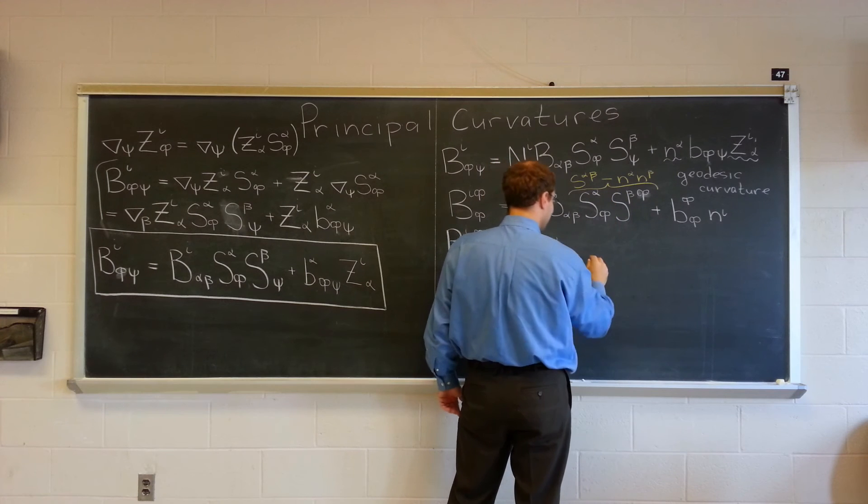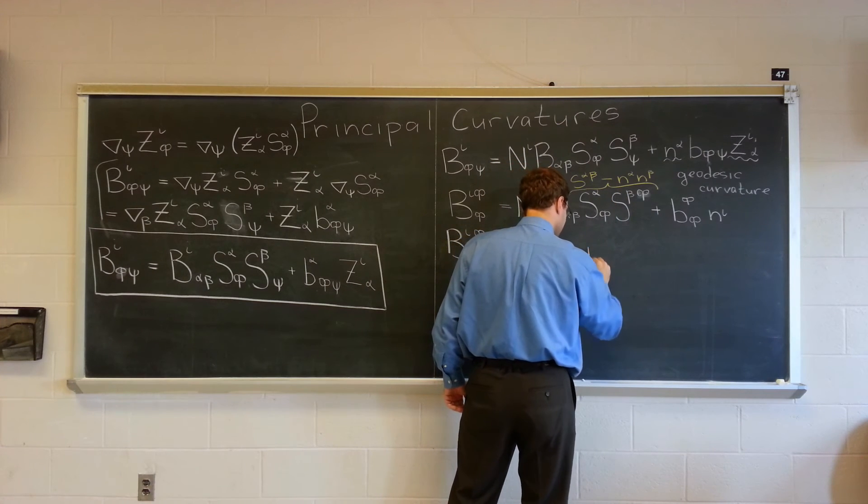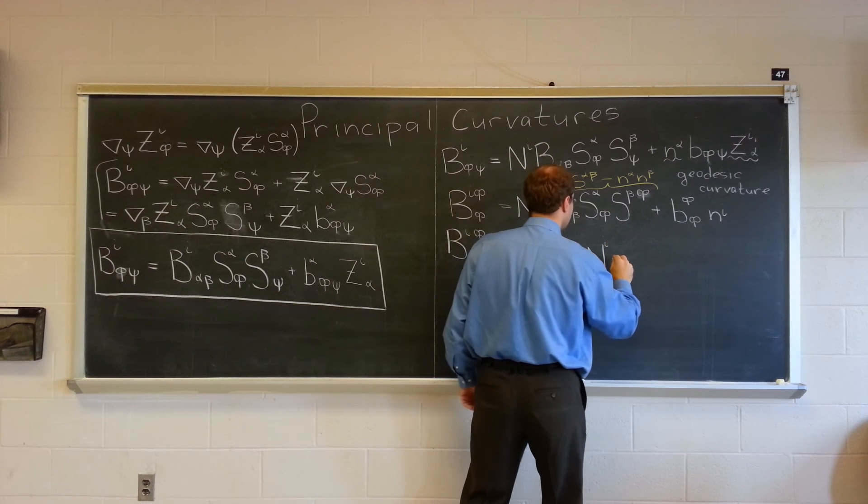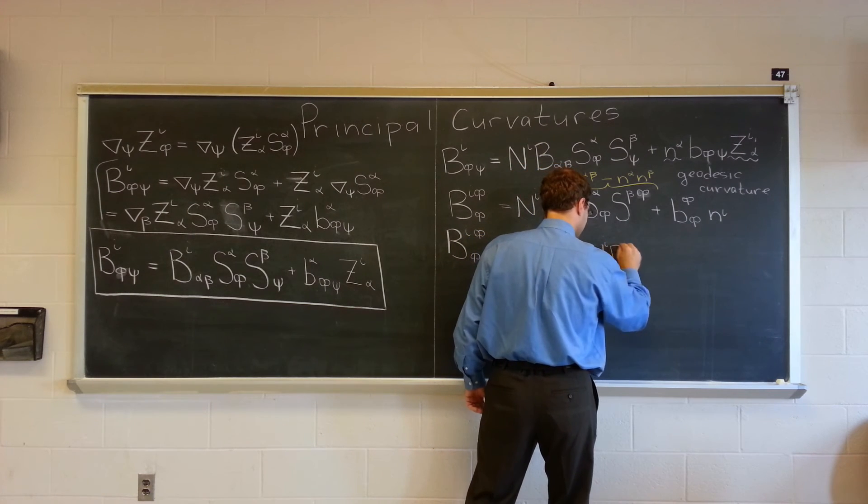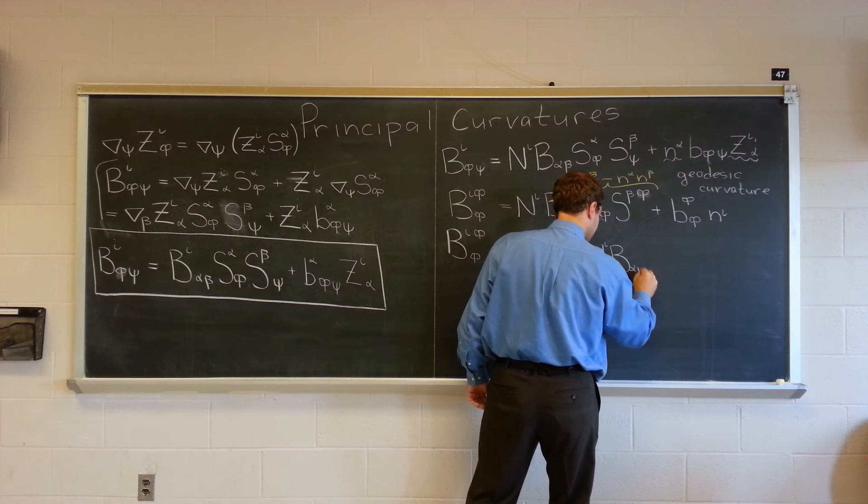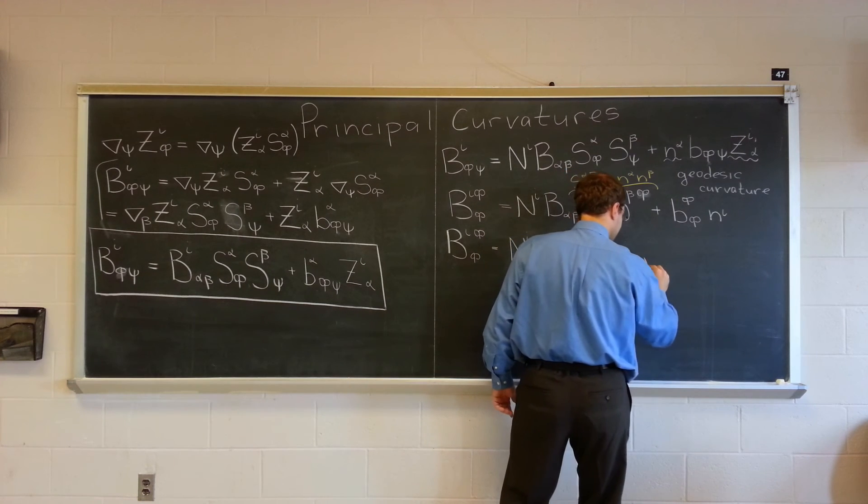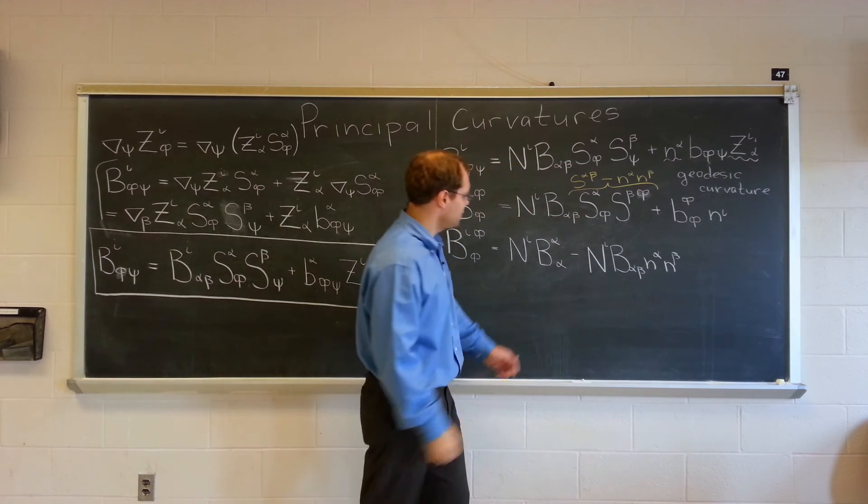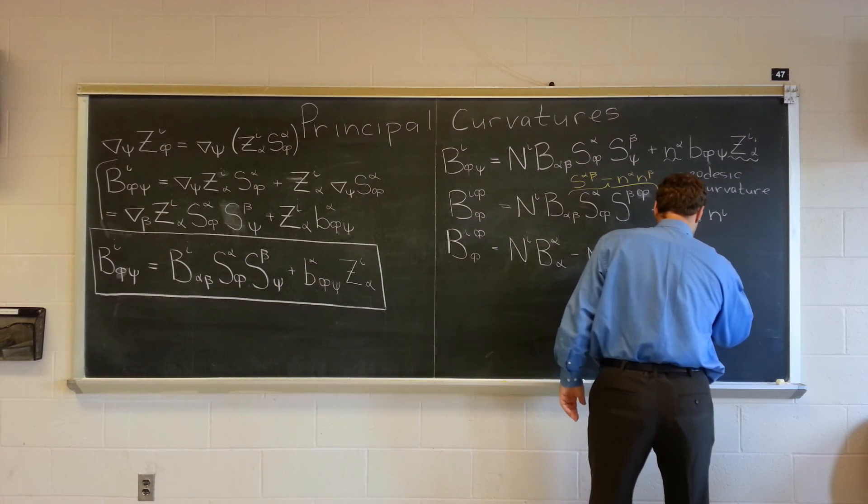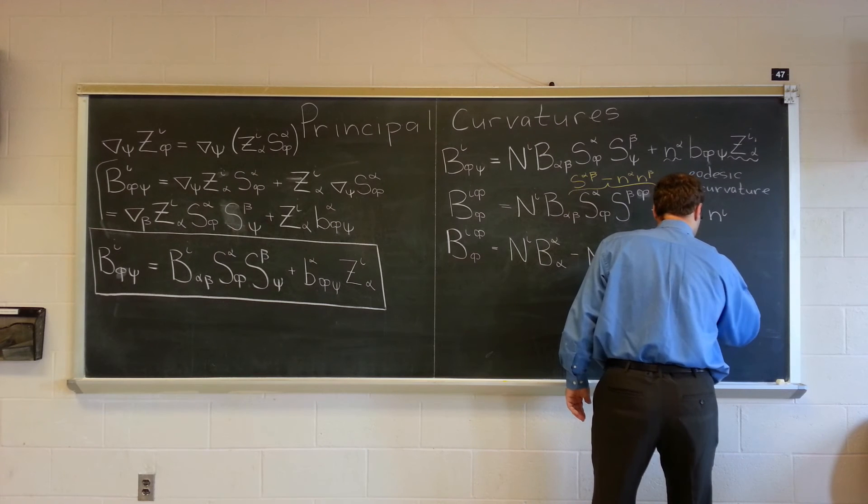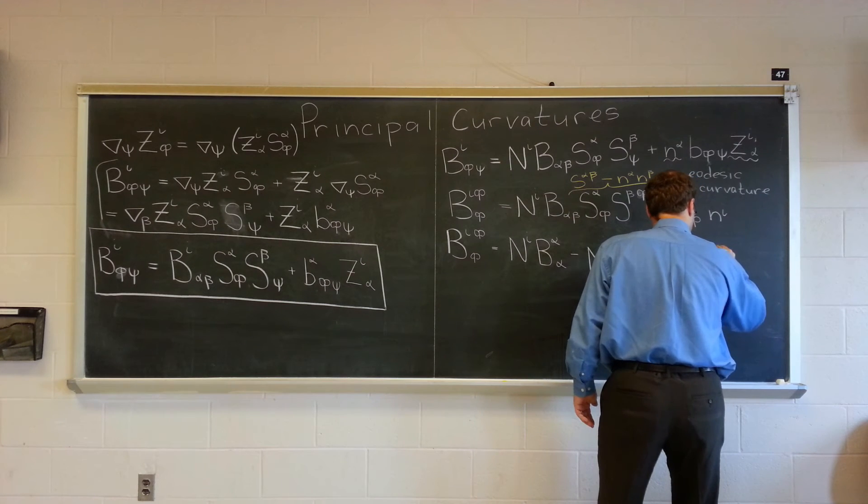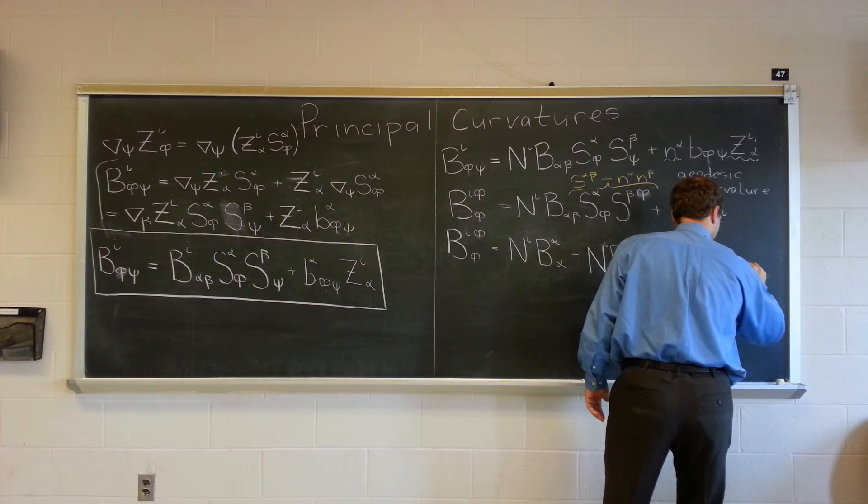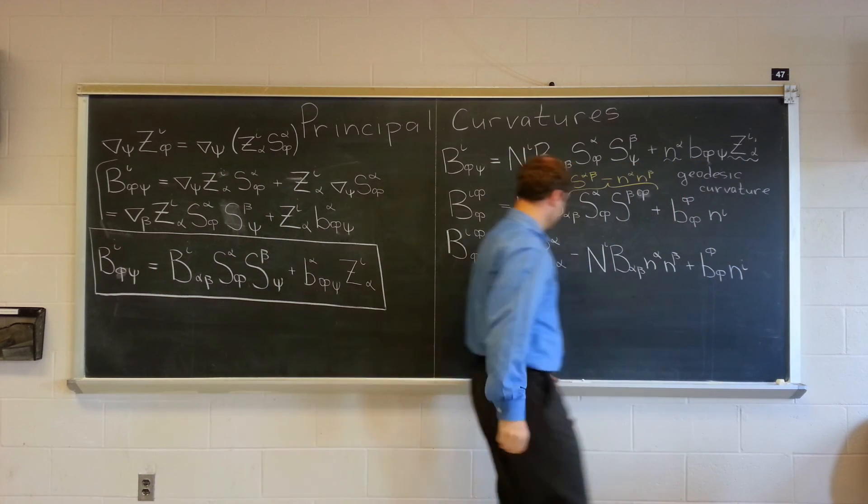N I N alpha N beta. N I. Excuse me. B alpha beta. N alpha N beta. Okay. That's wonderful. Plus this unchanged. Plus B psi psi and I. Alright.